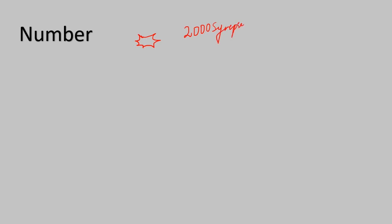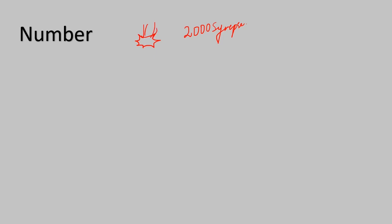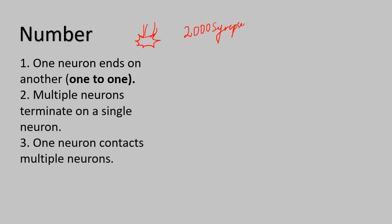Next is classification by number. How many synapses can connect to a neuron? There can be two neurons, or multiple neurons connecting to one single neuron. Or one neuron can connect to multiple neurons.